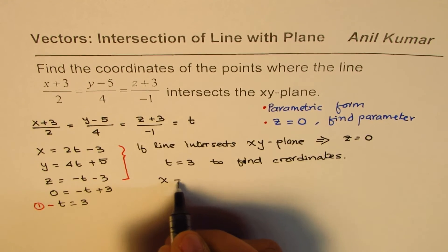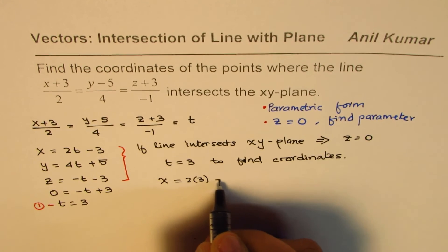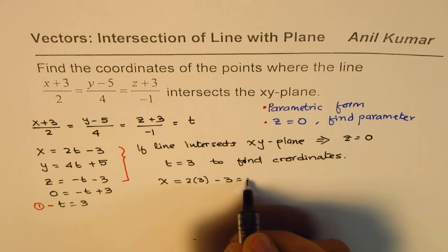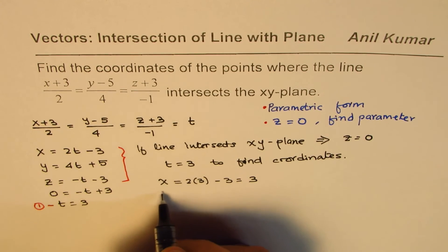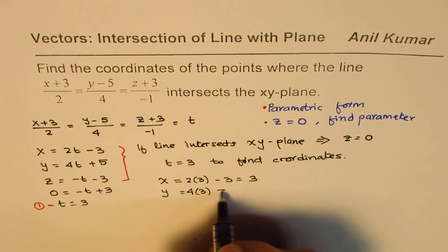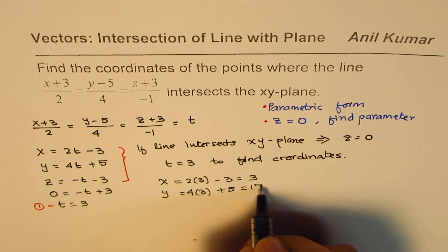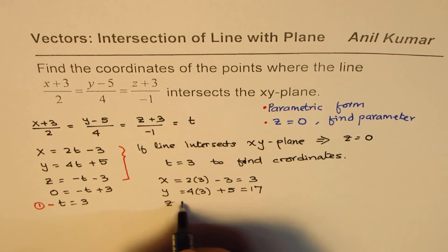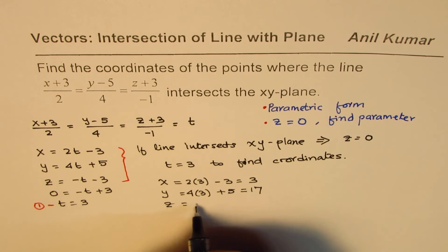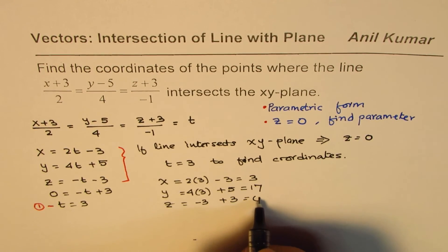I hope the steps are absolutely clear. So x coordinate will be what? So x will be, t is 3. So 2 times 3 minus 3, which is 6 minus 3 is 3. y value will be equal to 4 times 3 plus 5, which is 12 plus 5 as 17. And z, we know should be 0, but let's confirm. Minus 3 plus 3, that is 0.